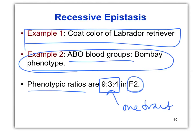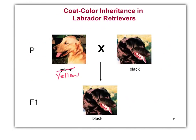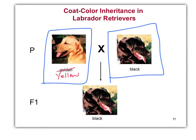All of these are based on the 9:3:3:1 genotypic ratio of two genes, but what the phenotype looks like changes — not the genotypes. If we have a true breeding yellow lab and a true breeding black lab — remember, two genes contributing to one trait, the trait being coat color — in the F1 we get all black.